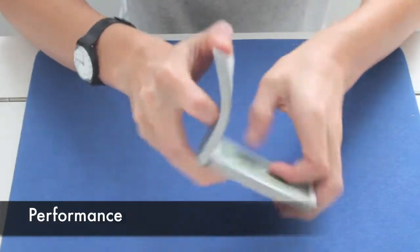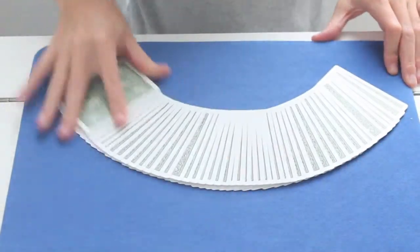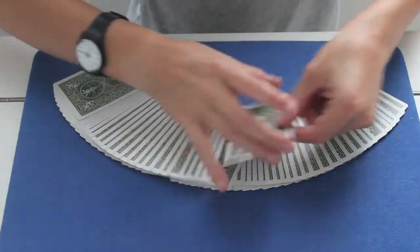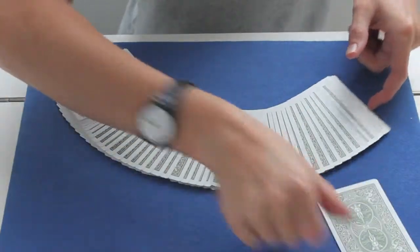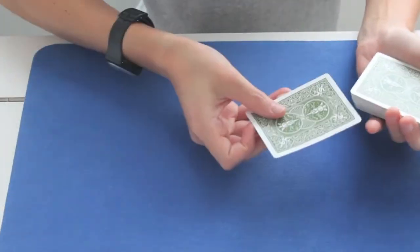First, you shuffle the cards. Then you ask the spectator to choose one. For example, this one. Take a look at it, leave it there, and I put it in the deck.